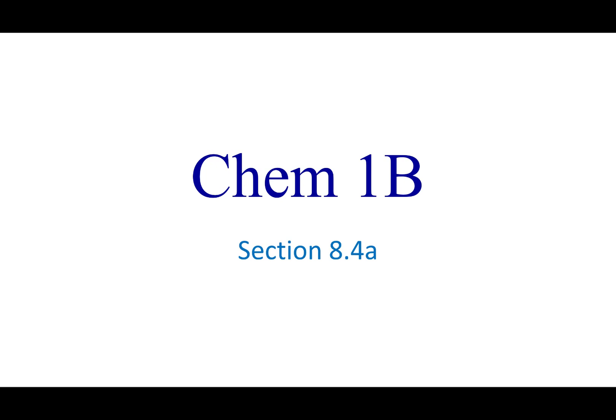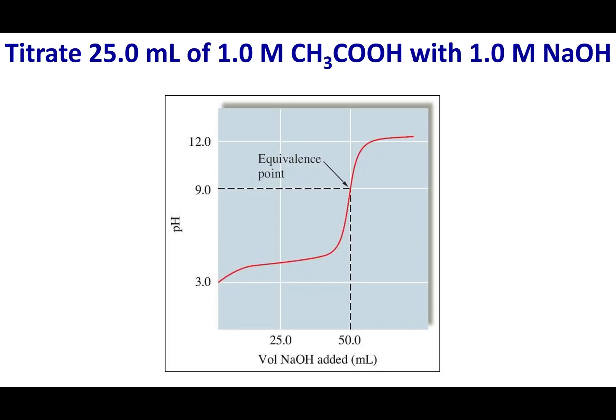Welcome to section 8.4a. Let's close out the last three lectures. In the last three lectures, we were talking about the titration of a weak acid with a strong base, and what we wanted to do was produce a pH curve. At the start of those lectures, I asked you to envision and draw out a pH curve. Hopefully you drew something that looks like this. We're going to talk about this in more depth later, but first I want to discuss one equation.